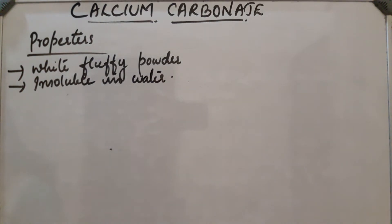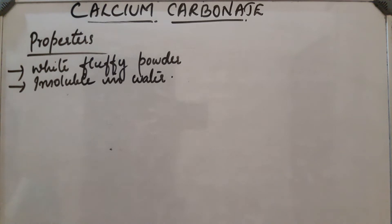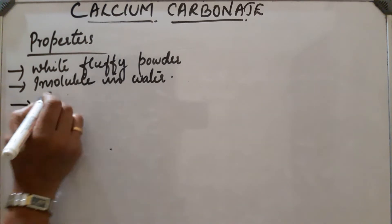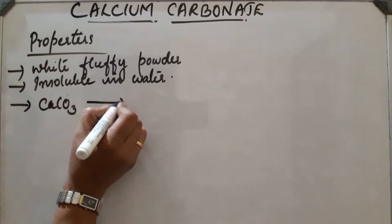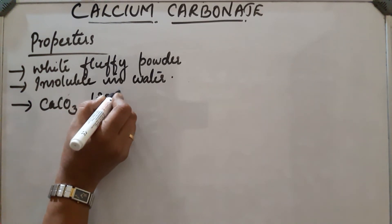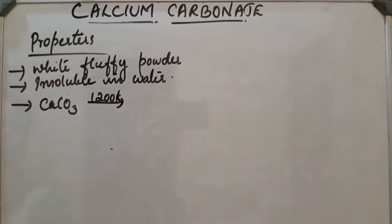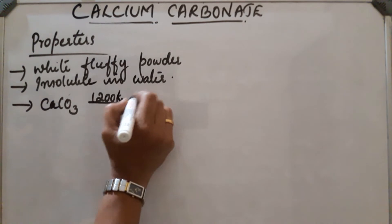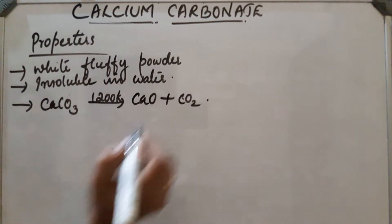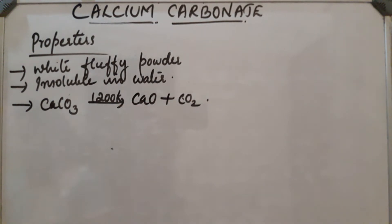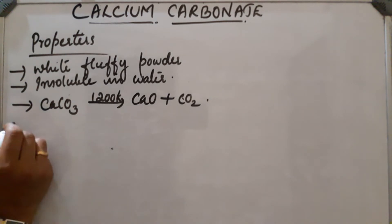It decomposes to form its oxides on heating at 1200 Kelvin. Calcium carbonate on heating at 1200 Kelvin produces calcium oxide and carbon dioxide.